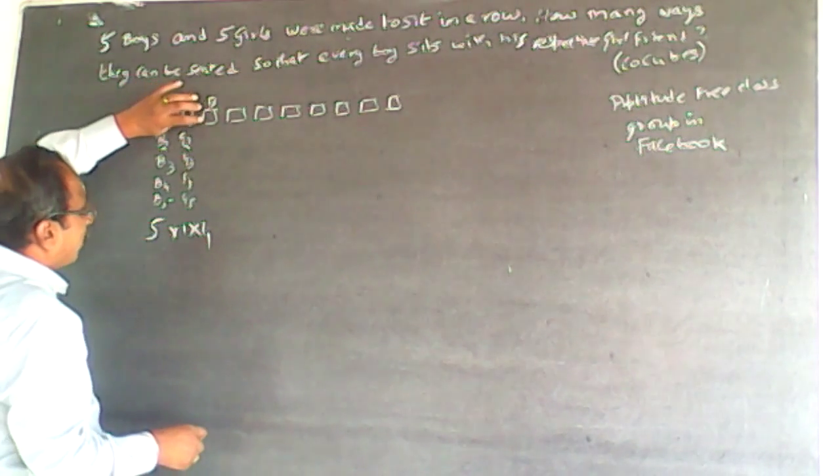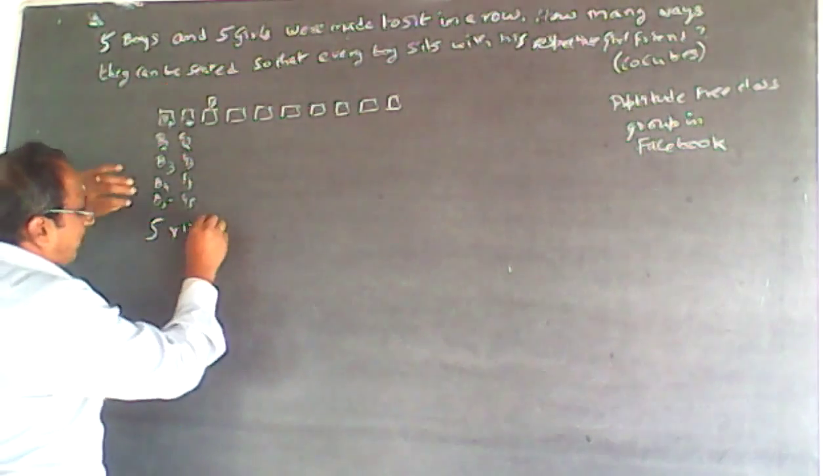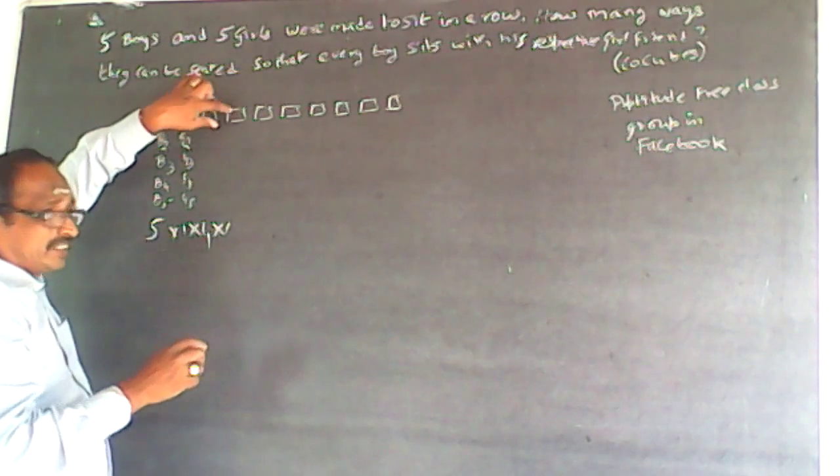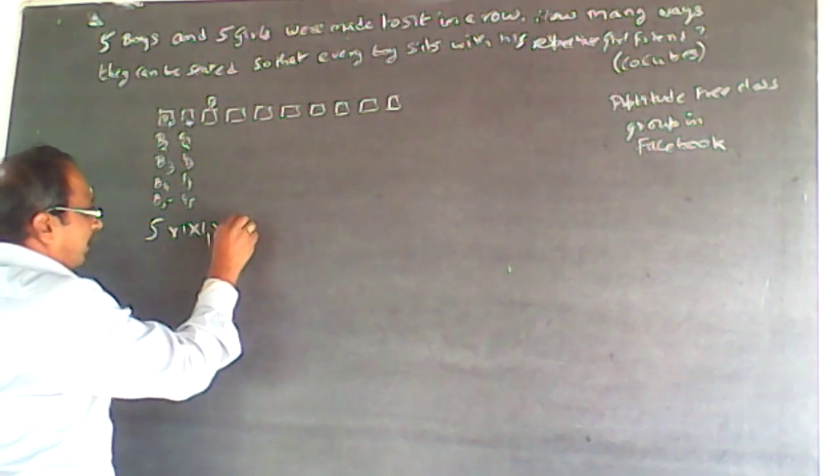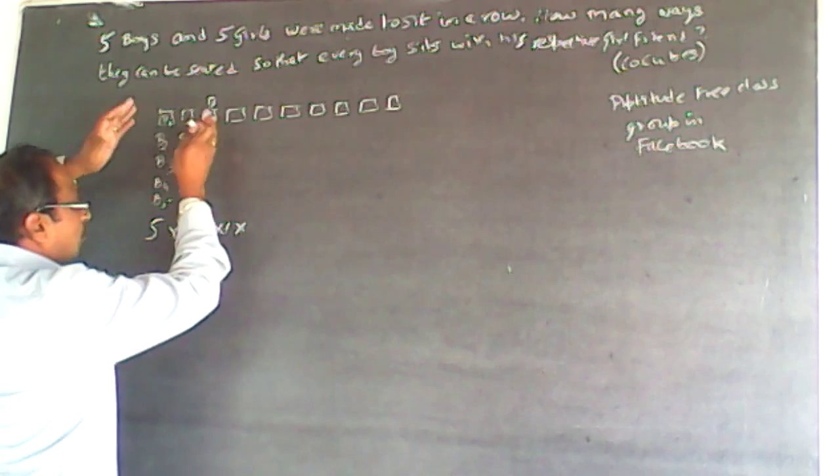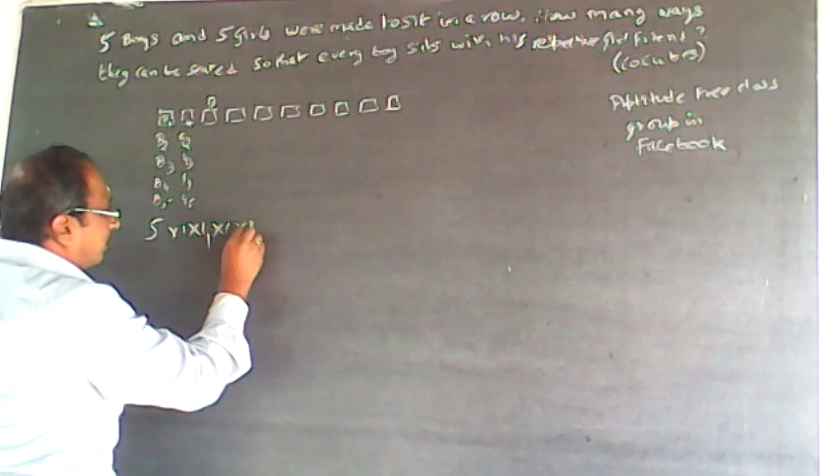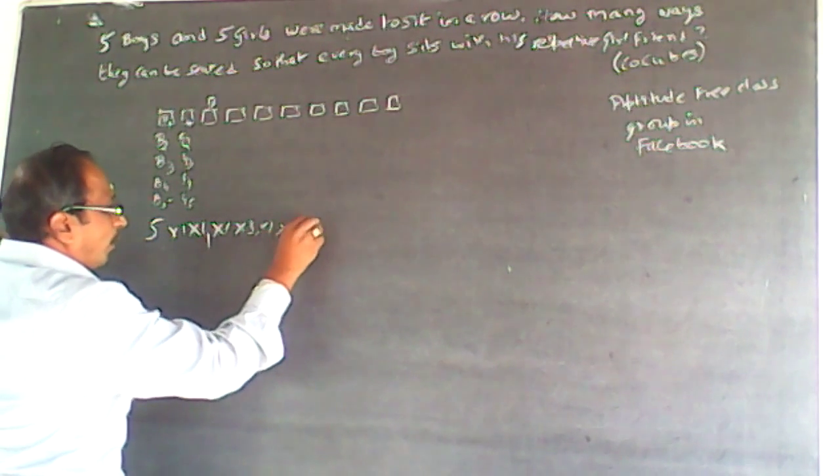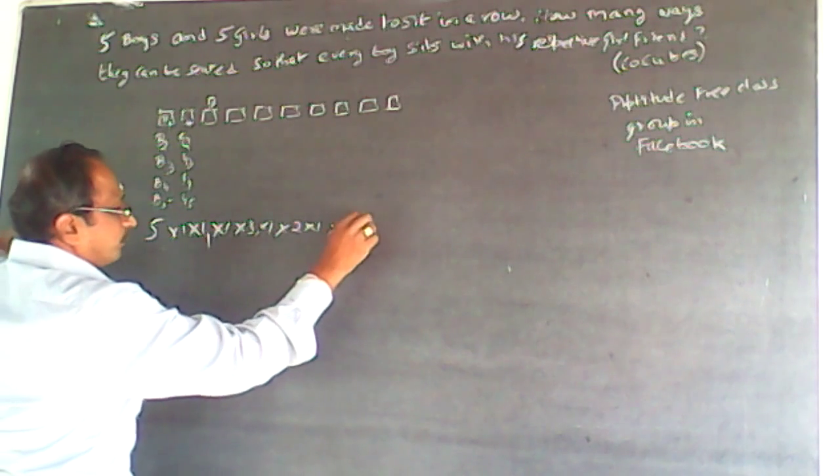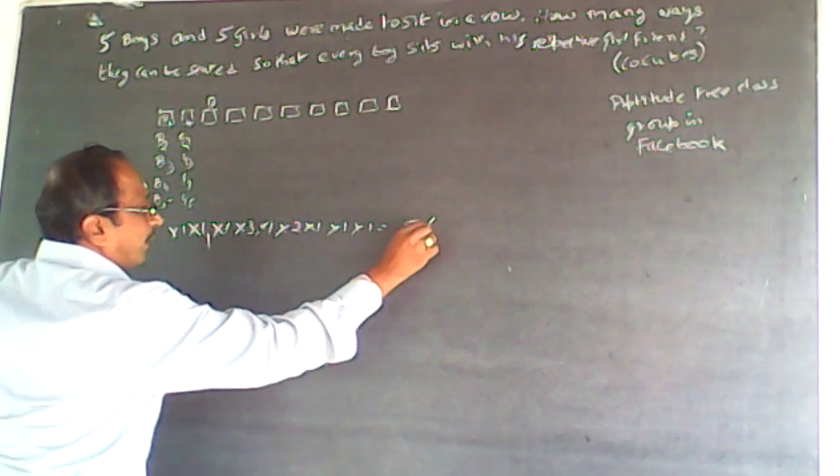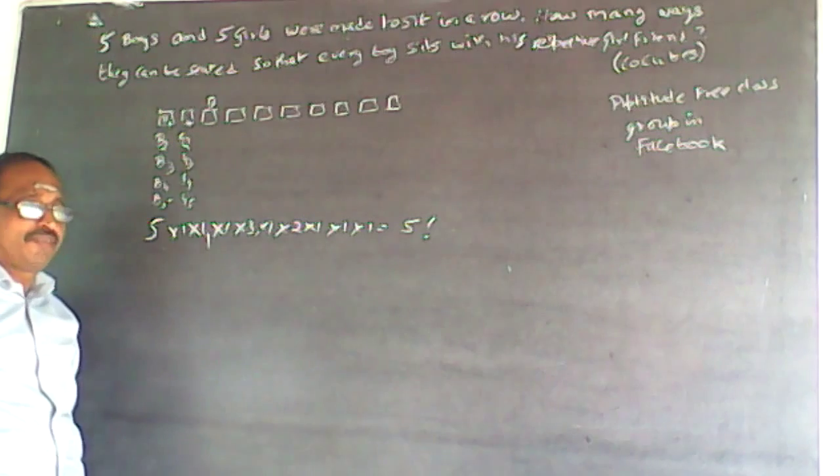So into four. Five, this will be into four. Now here four boys, any one of the four boys will be here, into one, only his girlfriend will be here. Similarly here will be into three, into one. Into two, into one. And into one, into one. So this is nothing but five factorial.